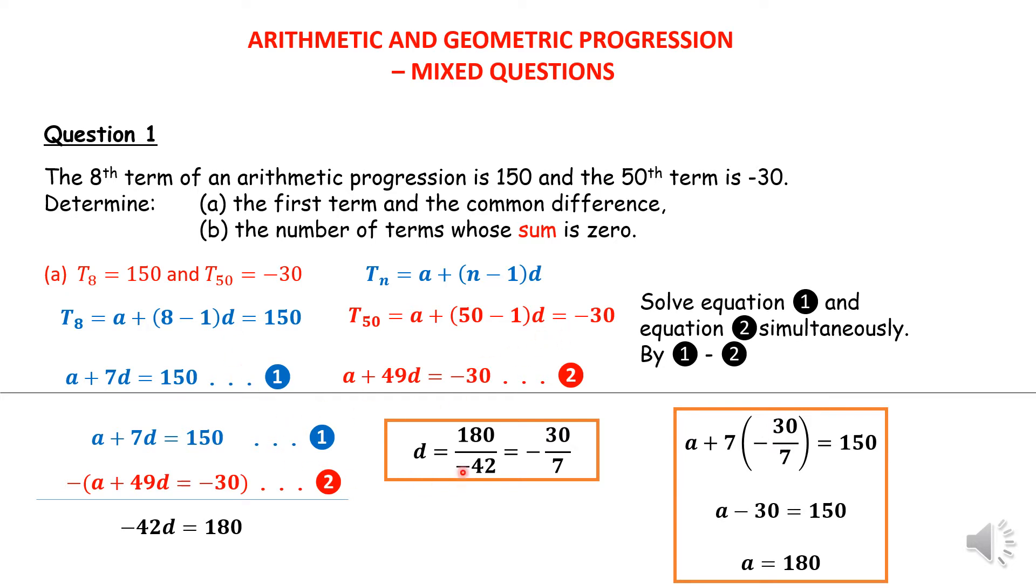I'm leaving it as an improper fraction. Substituting this negative 30 over 7 into equation 1, I'll get the value that a is 180. You'll get the same result if you substitute into equation 2.